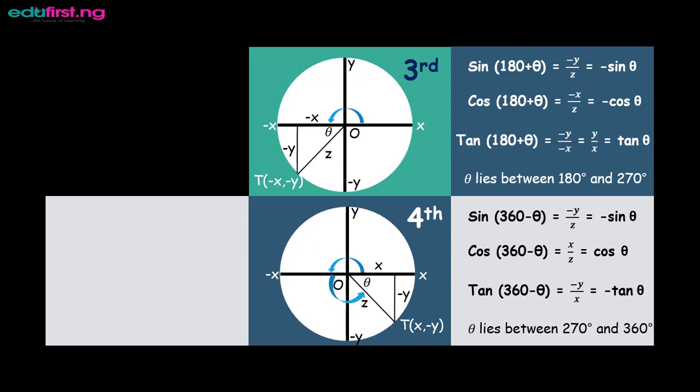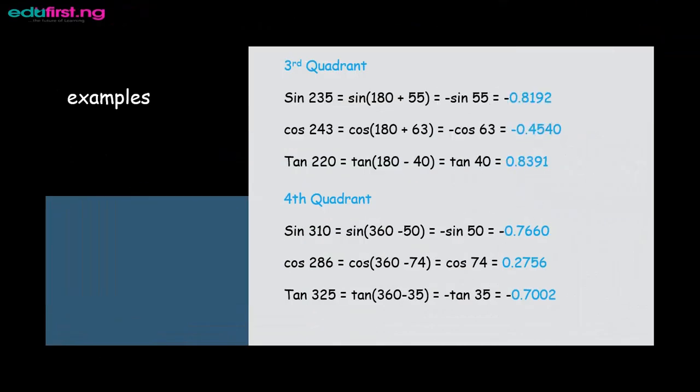For the fourth quadrant, the opposite is minus y, the adjacent is x, and the hypotenuse is z. Looking at where the blue arc covers: sine of 360 minus theta gives us minus y over z, which is minus sine theta. Cos of 360 minus theta gives us x over z — positive cos theta. Tan of 360 minus theta gives us minus y over x — minus tan theta. So in the third quadrant tan is positive, and in the fourth quadrant cosine is positive.